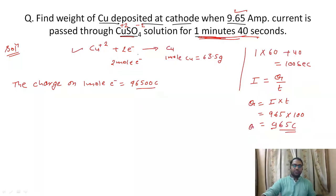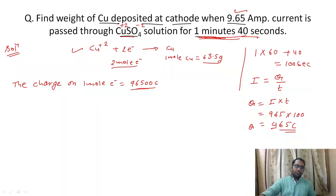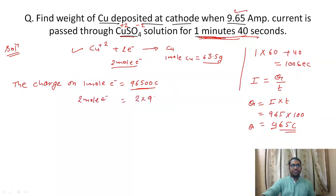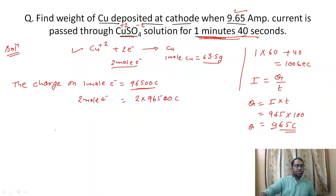From the equation, we need to flow two moles of electrons to deposit 63.5 grams of copper. The charge on two moles of electrons equals 2 times 96500, which is 193000 coulombs. So if we flow 193000 coulombs of charge, we get 63.5 grams of copper.